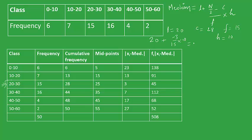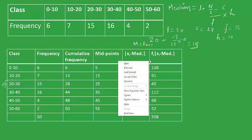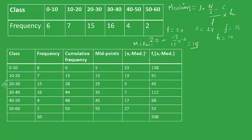So we get the median as 18. Now after we have the median, the rest of the steps are similar to what we did in the case of mean deviation. We calculate |xi minus median| for each class, and then we calculate fi into |xi minus median|.